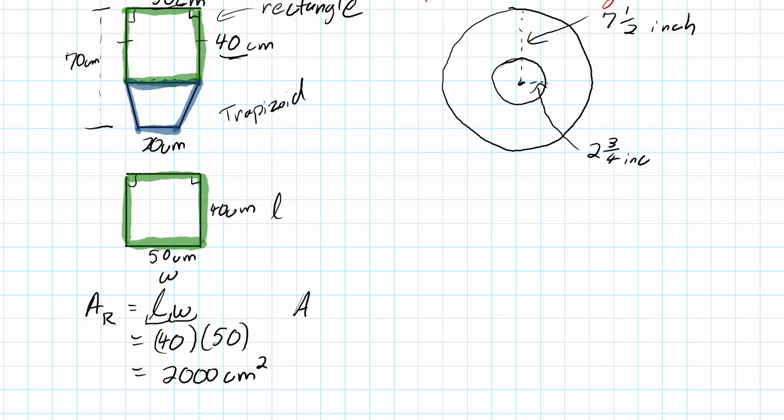Just as a proof here, if we use the other version, area of a rectangle length times width, and we reverse them, this was 50, this was 40, you use your calculator. No change in the answer. The answer's still the same. So it doesn't matter.